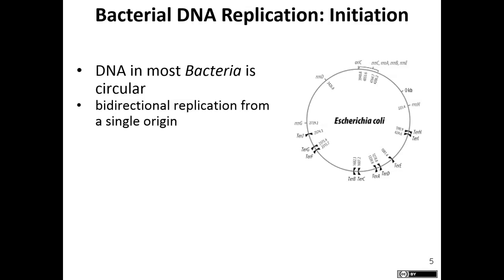Bacterial DNA is circular, so there's no technical beginning or end to the chromosome. There is, however, a replication fork where replication begins every time. One strand replicates five to three, and the other strand also replicates five to three, but in the opposite direction, because DNA runs in opposite directions.